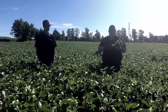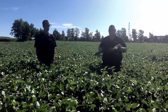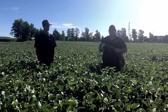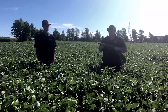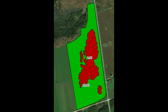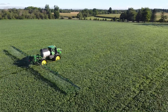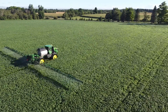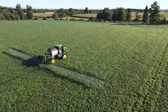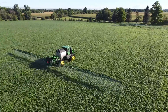From that, we were able to write some prescriptions and actually target some applications based on those areas. It was a 32-acre field, and based on the prescription we wound up spraying about 17 of it — roughly 50 percent of the field got a second pass of fungicide. We put a check strip in there, so we'll get some data at harvest time and figure out whether that second pass paid or not.